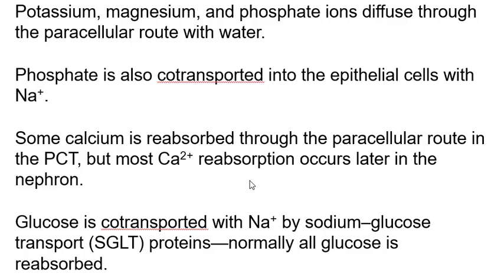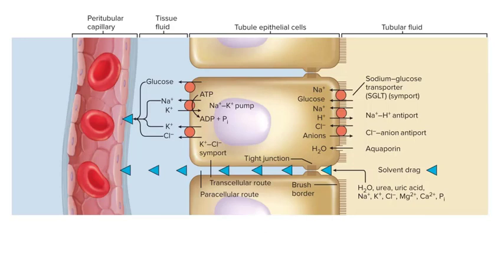As we go down through the loop of Henle we'll take out more calcium. Glucose is also co-transported with sodium, and phosphate is co-transported with sodium as well. Unless you're diabetic, all the sugar will be reabsorbed — you should not find sugar in your urine. If you do, it's a signal that you're having diabetes. This slide tries to put everything together, showing how cells are held together but fluid can pass through, with sodium, potassium, chlorine, magnesium, calcium, phosphate, urea, and uric acid absorbed by the peritubular capillaries.